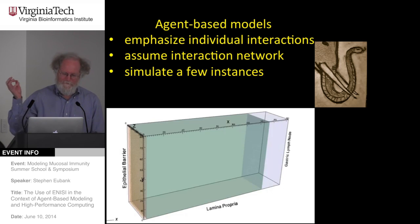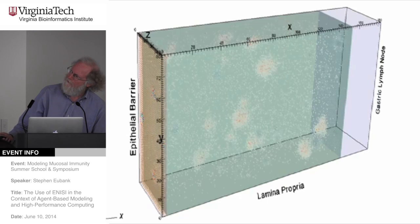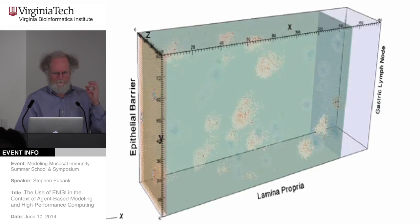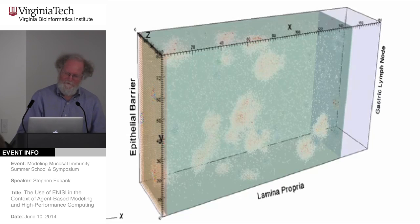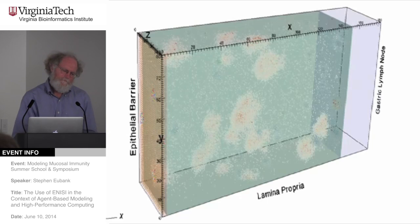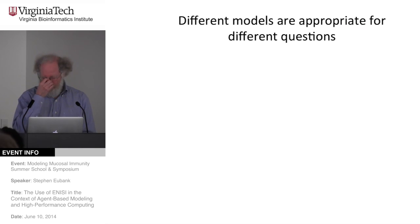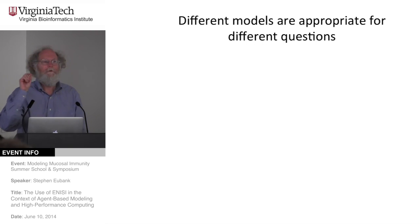Agent-based models emphasize individual interactions. They assume an interaction network, but one that evolves with time. We can only simulate a few samples from this huge probability space. The results are things like the movie I showed — dead cells colored so you can see where lesions form in the simulation. The different volumes represent the different things in the system: lamina propria, lymph nodes. These different models have different characteristics, focus on different things, make different assumptions, and each is appropriate for a different question.